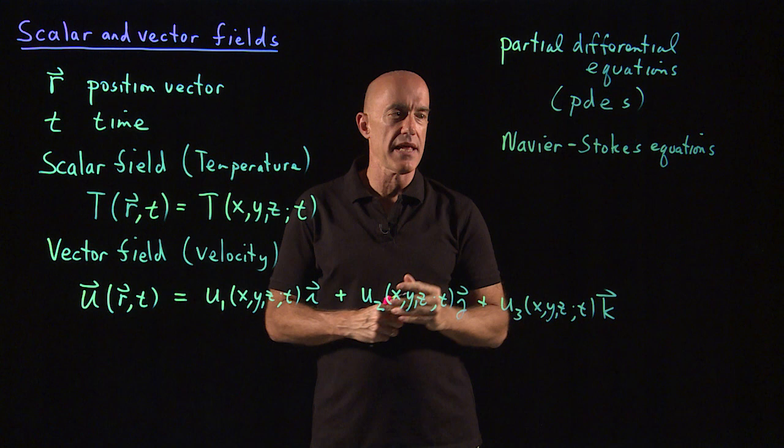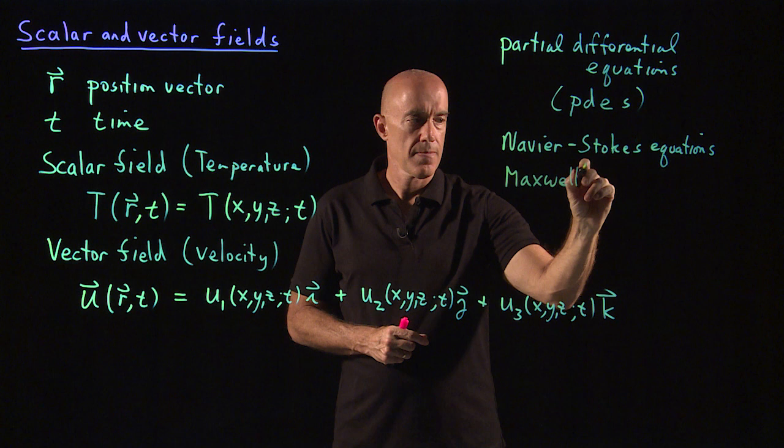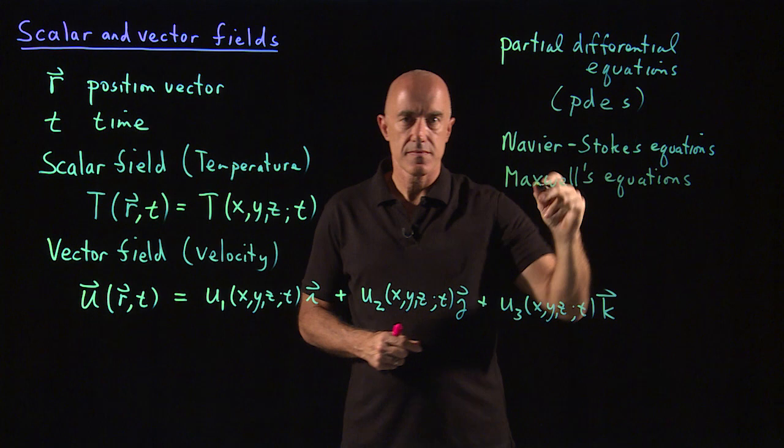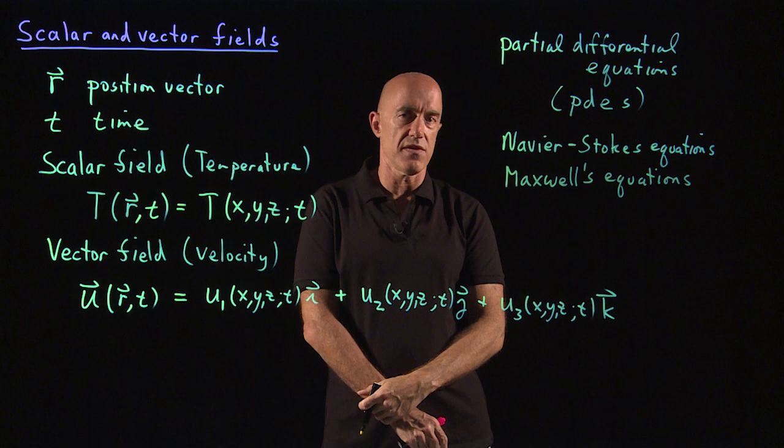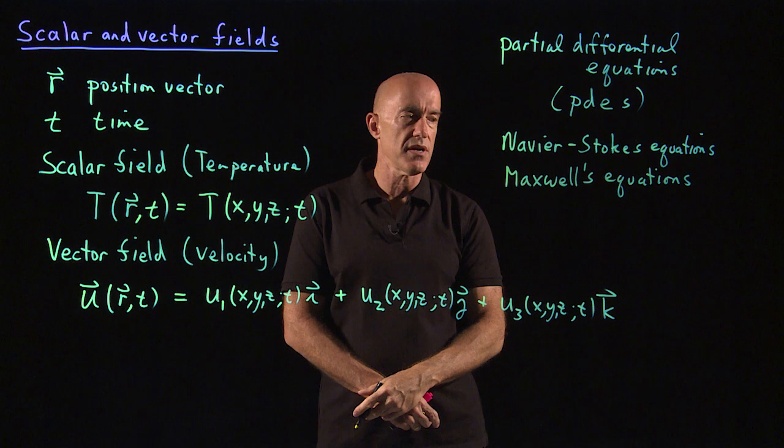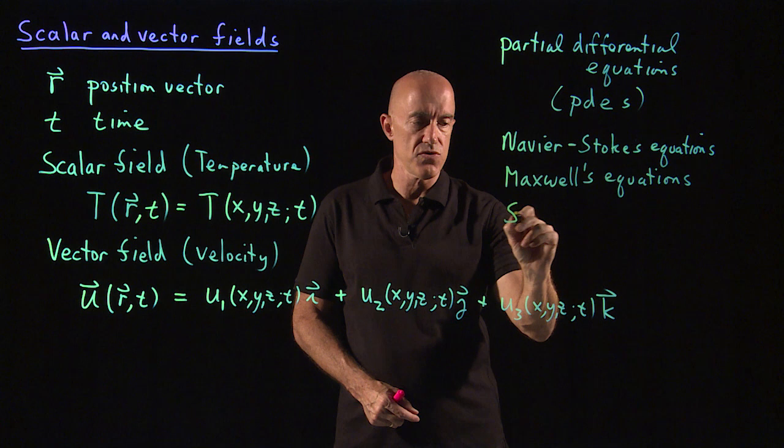For the electric and the magnetic field, it could be Maxwell's equations. These are both for vector fields. The Navier-Stokes equation is for the velocity of a fluid. The Maxwell's equations is for the magnetic field, which is a vector, and the electric field, which is a vector.